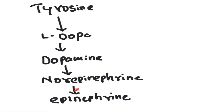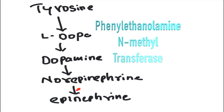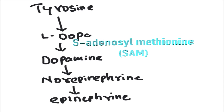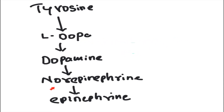The conversion of norepinephrine into epinephrine is done by an enzyme called phenylethanolamine N-methyltransferase (PNMT). As indicated by the name, this is a methylation reaction, so it needs S-adenosylmethionine (SAM). SAM is converted into S-adenosylhomocysteine during this process.